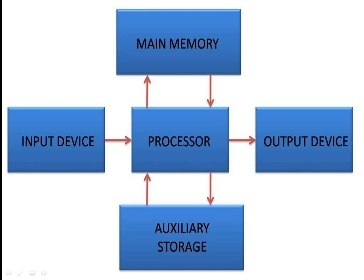This pictorial representation shows the architecture of auxiliary memory — how it is associated in the system and how functions are governed. There are two types of input methods: first, through input devices like keyboard or mouse; and second, we can take input from the auxiliary store — for example, inserting a CD-ROM or DVD to watch a movie.